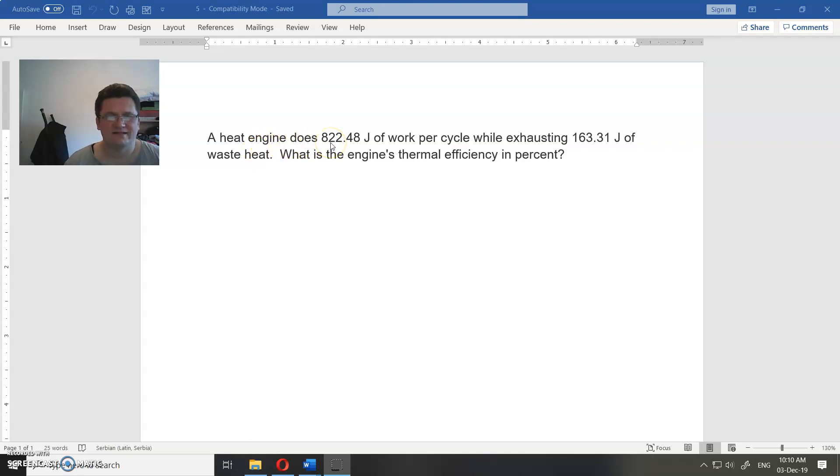A heat engine does 822.48 joules of work per cycle while exhausting 163.31 joules of waste heat. What is the engine's thermal efficiency in percent?